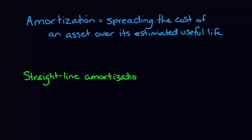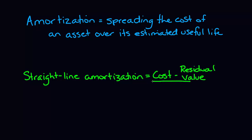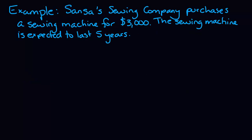Straight line amortization can be calculated using the following formula: the cost of the asset minus the residual value or salvage value — essentially what you can get for the asset when you're done using it — over the useful life, either in months or in years.